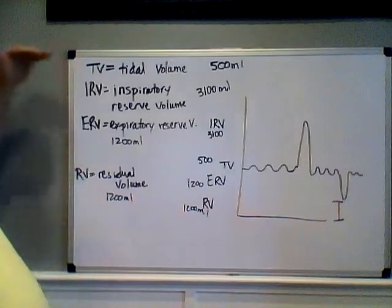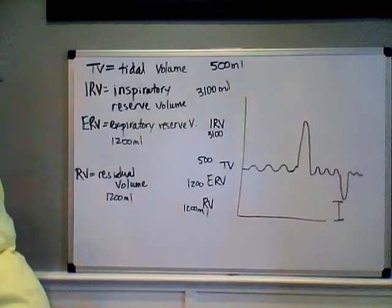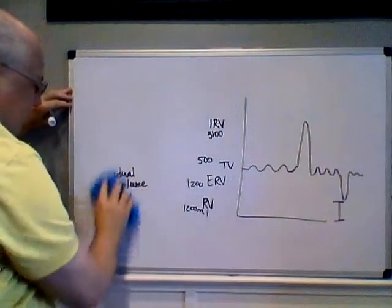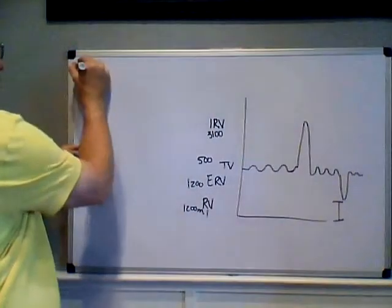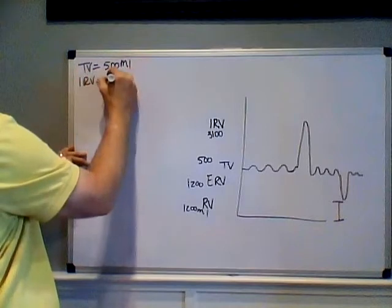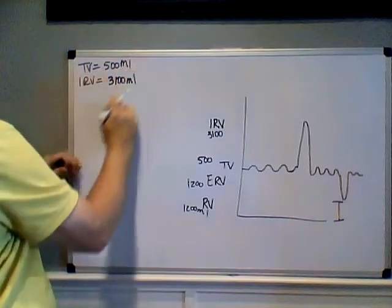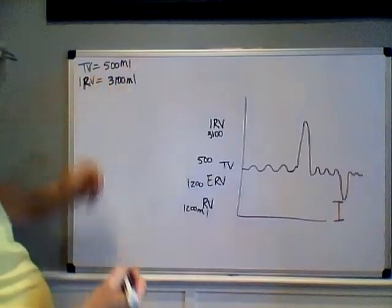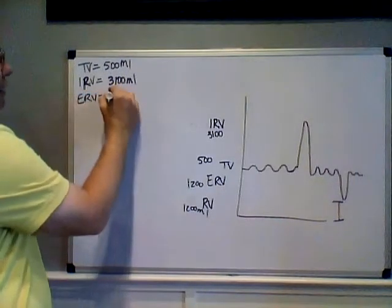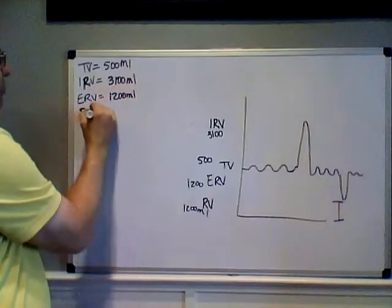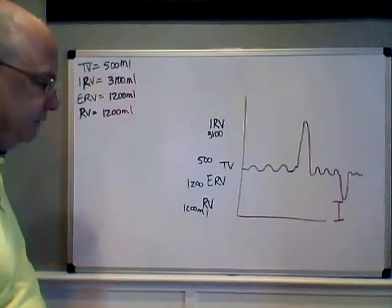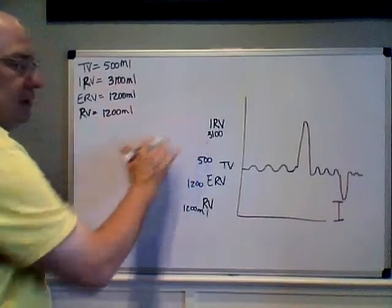To summarize the four volumes: tidal volume is 500 milliliters; inspiratory reserve volume is about 3,100 milliliters; expiratory reserve volume is 1,200 milliliters; and residual volume is 1,200 milliliters. These are approximate numbers and will vary between individuals.